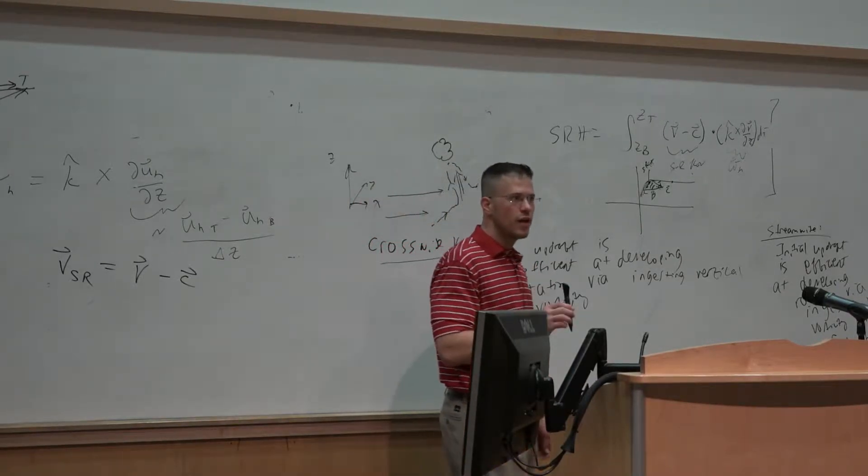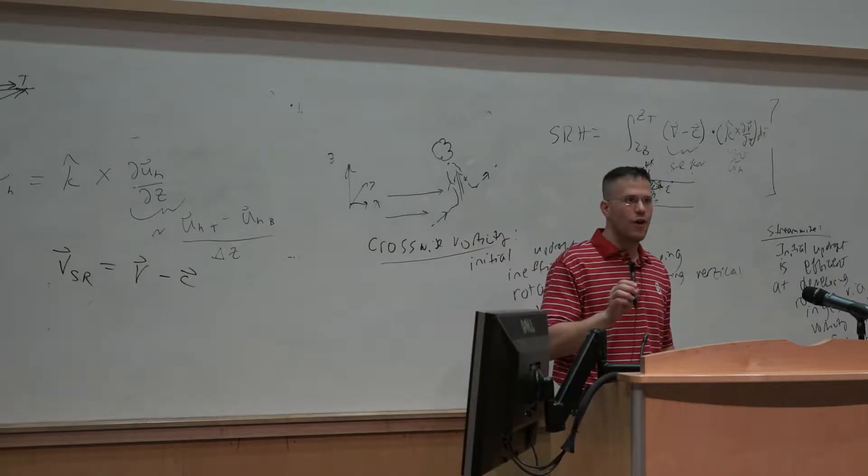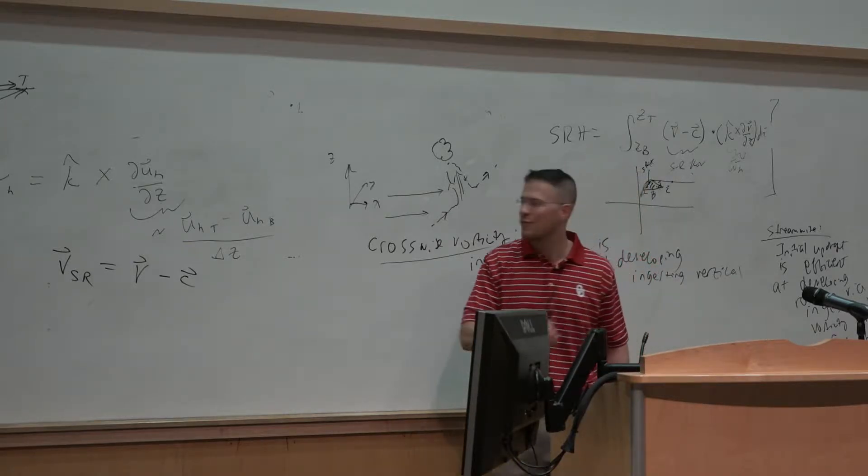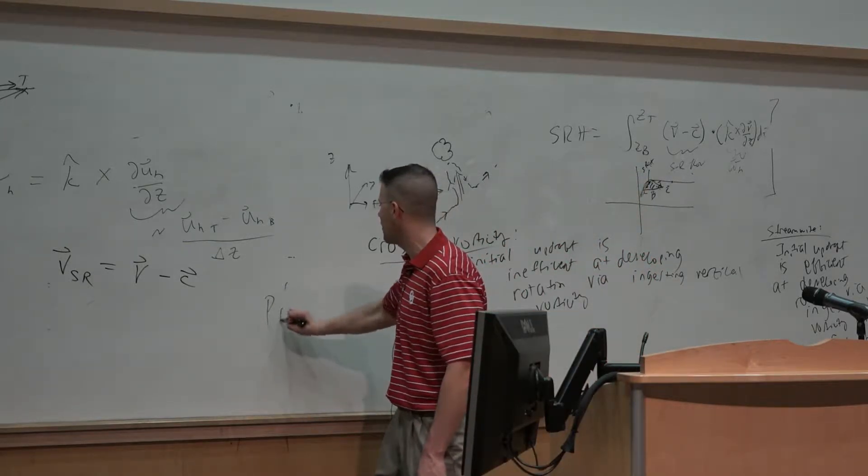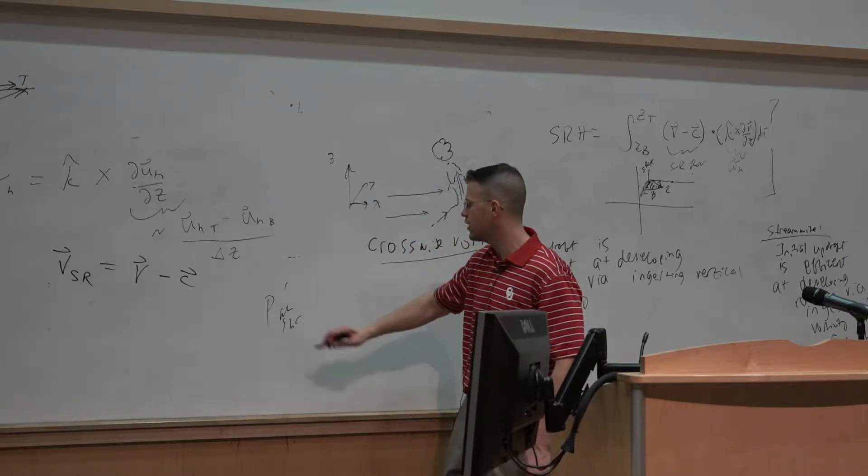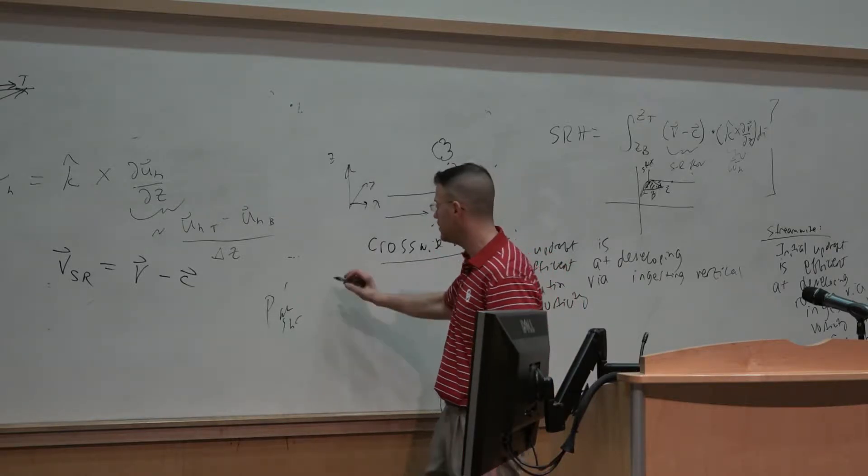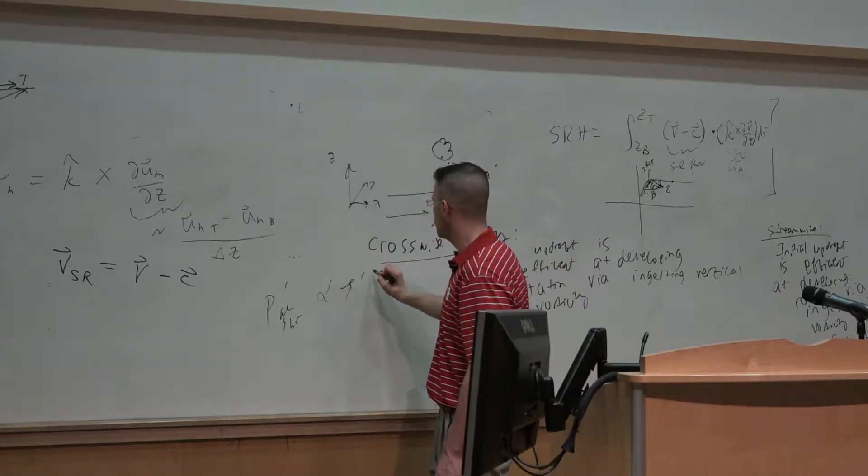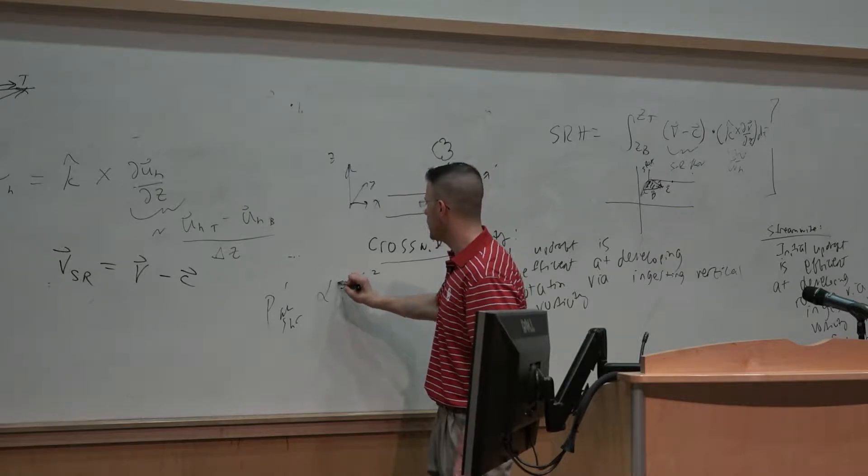Remember, we're taking horizontal vorticity and bringing it into the vertical. Well that's just effectively related to our p prime nl shear, nonlinear perturbation pressure gradient force associated with vertical shear driven by this, proportional to zeta prime squared, in this case with a negative sign.